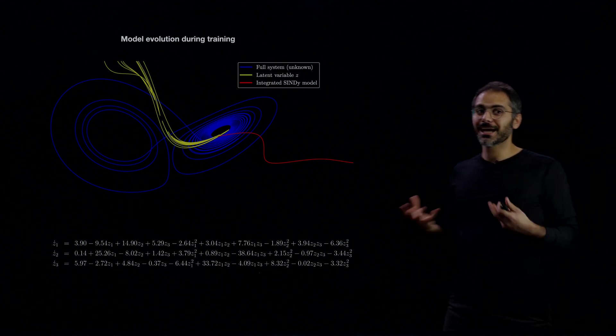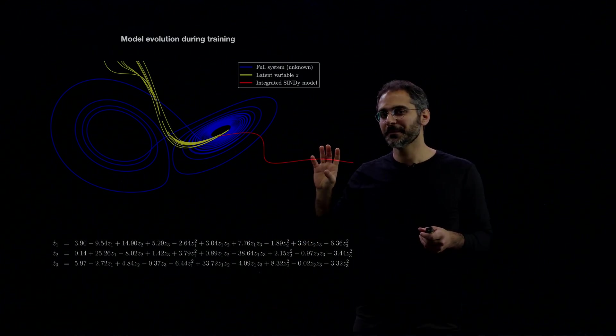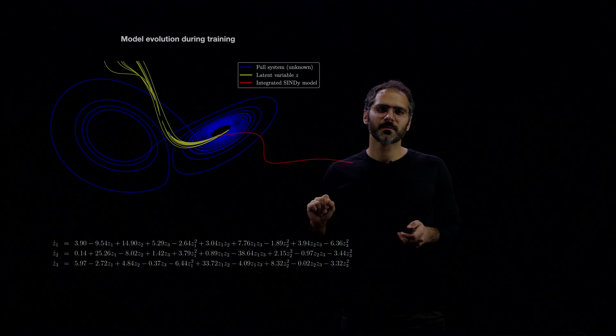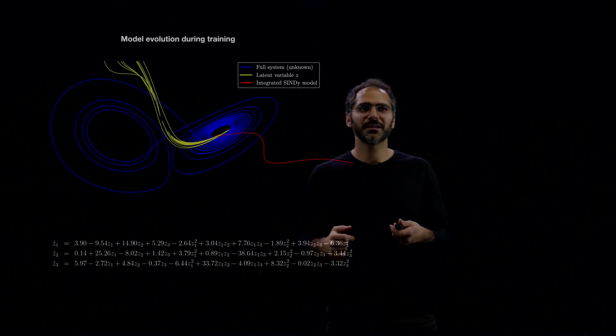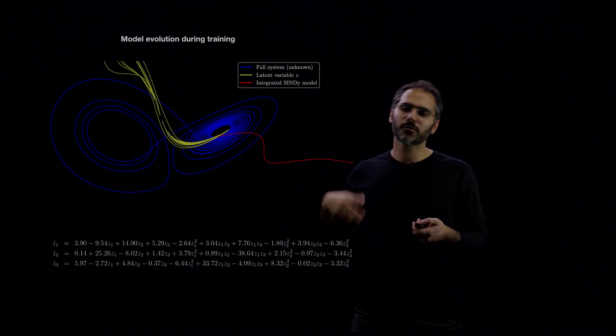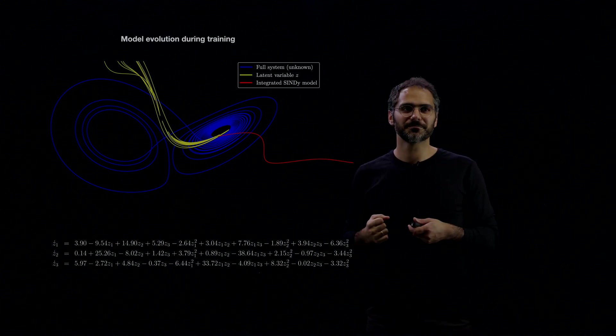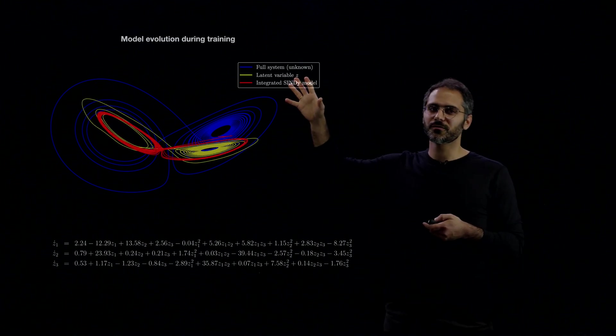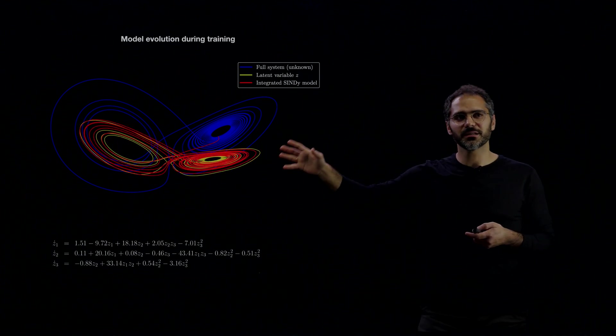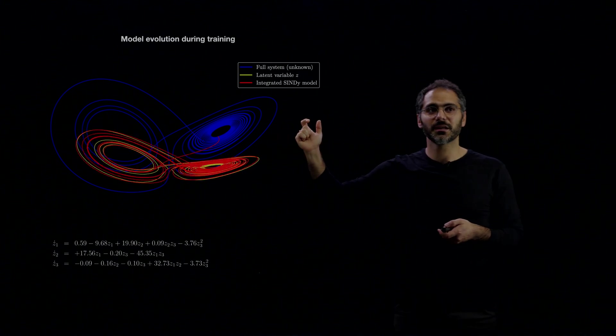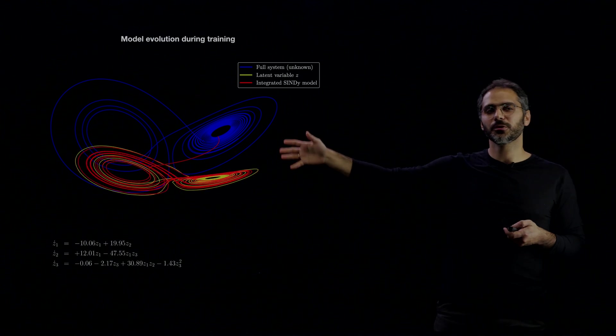So let's look at what the algorithm actually does. Here we initialize our neural network to map to the dominant modes in the latent variable. And starting from that approximation we train the algorithm to find the most optimal solution given those losses. Of course we're also minimizing the sparsity of the solution. So here the full system is unknown, we're just measuring the x dimension, the first dimension. And the yellow curve is the latent variable and the red curve is the integrated SINDy model.